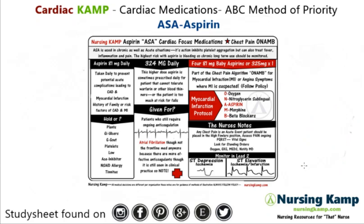Some other things to recognize with aspirin is its role in myocardial infarction and being part of that algorithm. When we assess chest pain, we give nitro, then we give our aspirin — four baby aspirins.